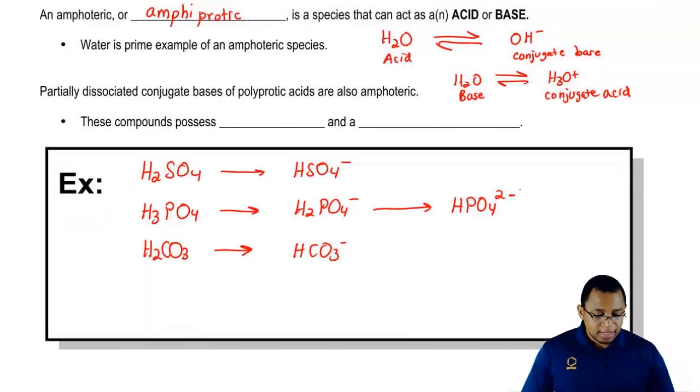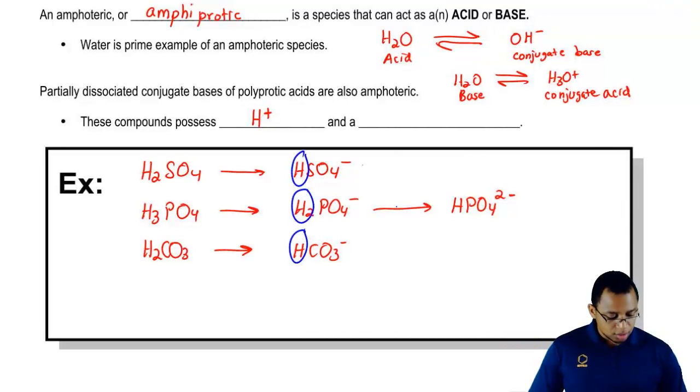Those are our examples. Here we're going to say these compounds, these amphoteric species have something in common. They all possess an H positive, at least one H. Then all of them possess a negative charge.